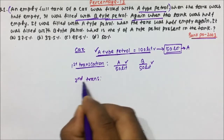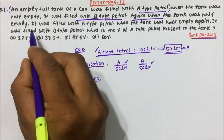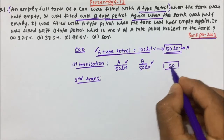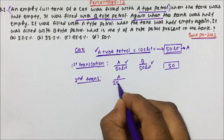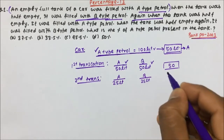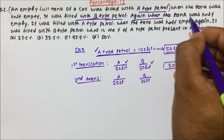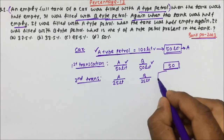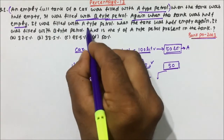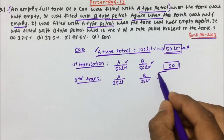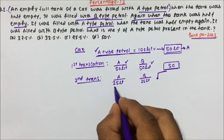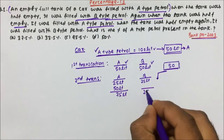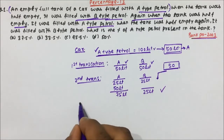In the second transaction, the tank is again half empty — it was 100 litres and now becomes 50 litres — so A-type becomes 25 litres and B-type becomes 25 litres. Then when the tank is half empty again, it is filled with A-type petrol, so A-type becomes 75 litres and B-type remains 25 litres after the second transaction.